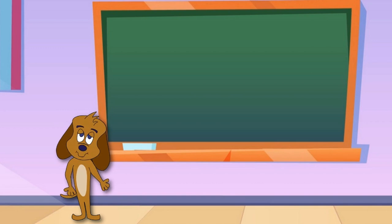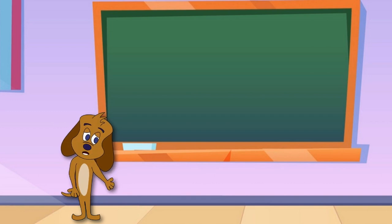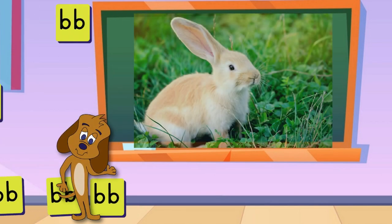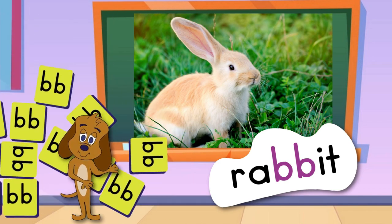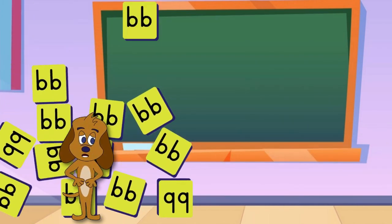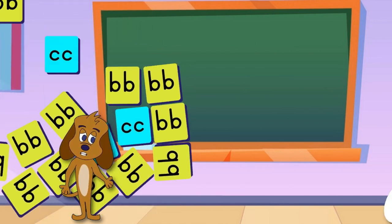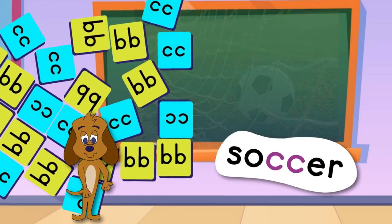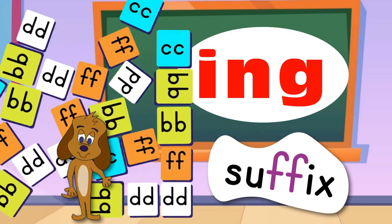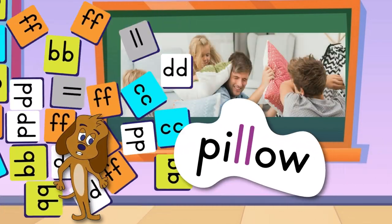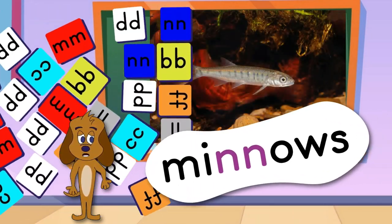Lots of consonants can be in the middle of words with vowels on both sides, like the letter B as in rabbit. Rabbits are fun to bark at too, but you probably already knew that. Here are some more words with double consonants in the middle: the letter C in soccer, D in ladder, F in suffix, L in pillow, M in hammer, N in minnows.